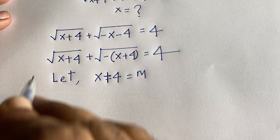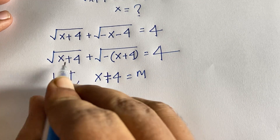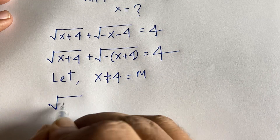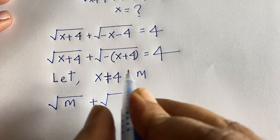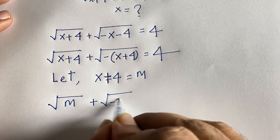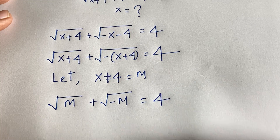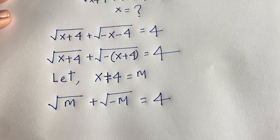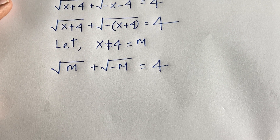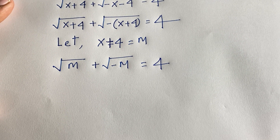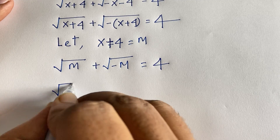With the substitution m = x+4, the equation becomes √m plus √(-m) equals 4.